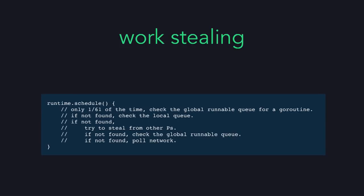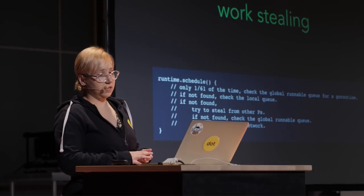Most of the scheduling strategy can be read in the runtime package's schedule function. What it does is check the global runnable queue 1/61 of the time, so as not to give too much advantage to local queues. If there are no runnable Go routines there, it checks the local queue of the current processor. If there are still none, it tries to steal from other processors' queues. If still not found, it checks the global runnable queue again, and if everything must be blocked, the scheduler polls the network and waits for at least one Go routine to become runnable.